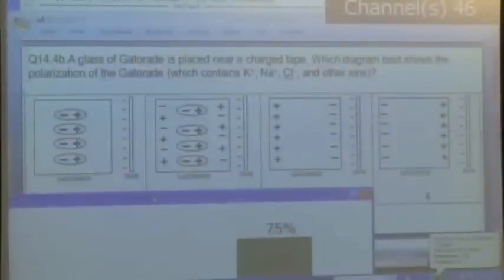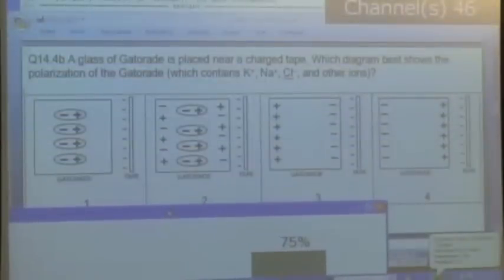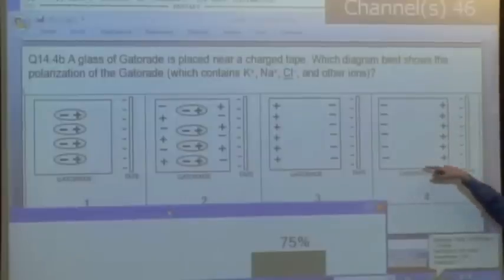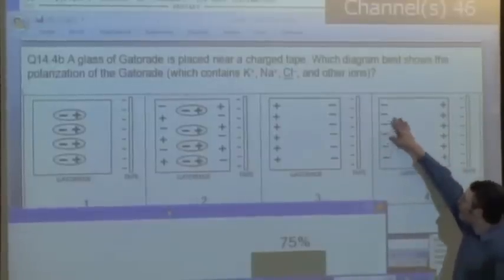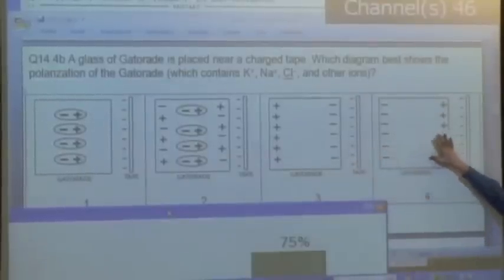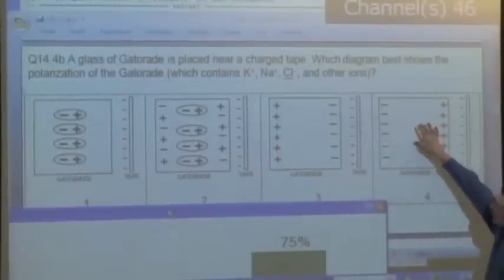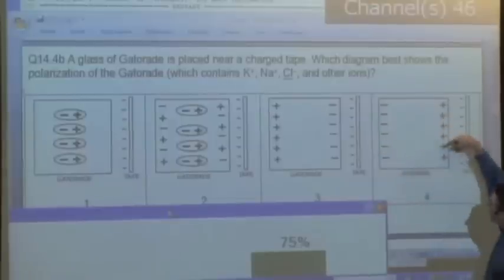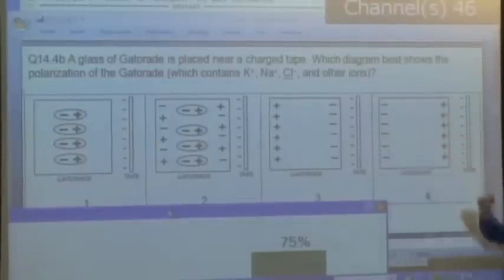Okay, so answer number four is the best choice, because it shows the correct polarization. It shows that these are ions, not an insulator. And it shows that this charge is only on the surface, not in the interior. So we'll talk more about this next time.